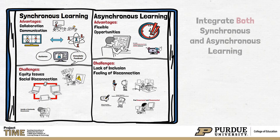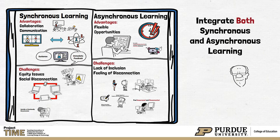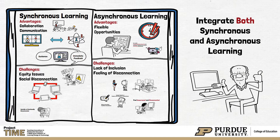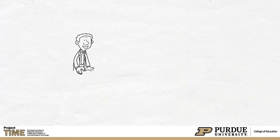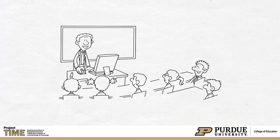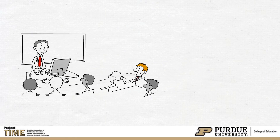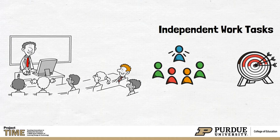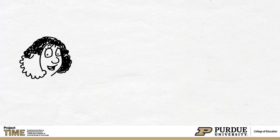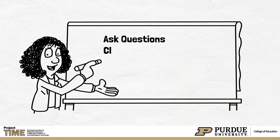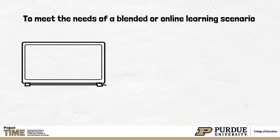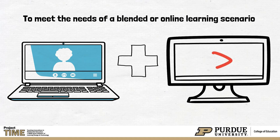If given the choice, an instructional approach integrating both synchronous and asynchronous learning may be more effective than relying wholly on one or the other. In fact, most teachers already blend similar instructional strategies in face-to-face learning scenarios. For example, when introducing a new concept, many teachers utilize direct instruction or lecture to ensure all students have a basic knowledge of a skill. Then they often utilize independent work tasks where students work alone or in small groups at their own pace. During this independent work, teachers often work with individual students by asking questions, clarifying misconceptions, and providing needed motivation. In a similar way, asynchronous and synchronous learning can be used together to meet the needs of a blended or online learning scenario.